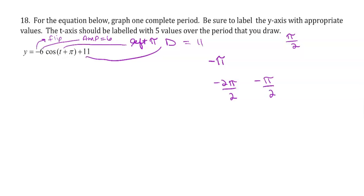Add pi over 2 to that, and you get 0. We get 0, and add pi over 2 to that, you get pi over 2.